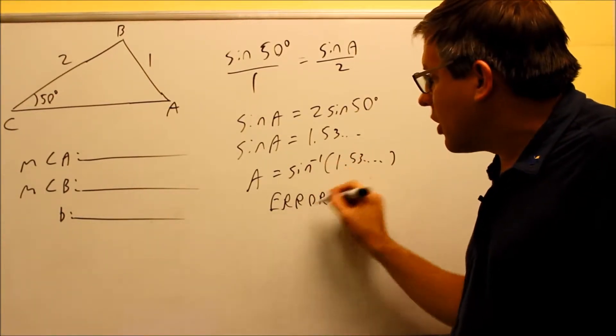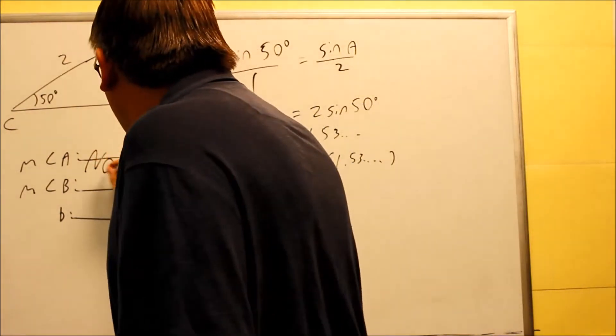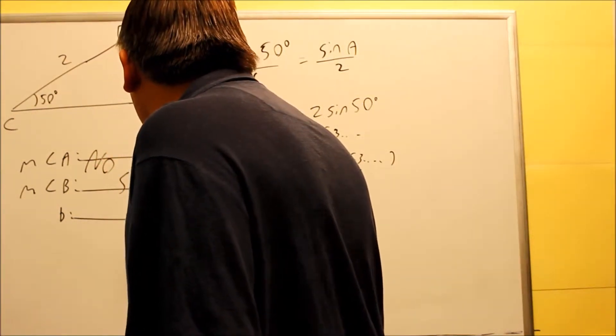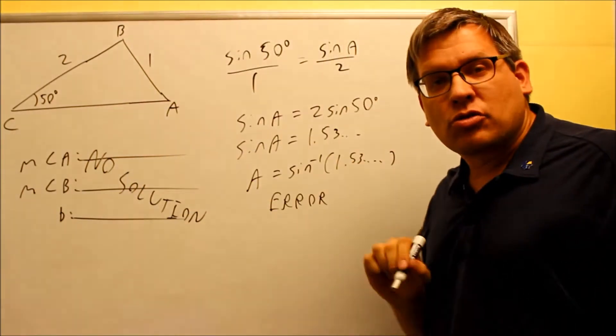So in this case, because you get an error, that means that the whole problem is going to be no solution. That means it's actually not possible to draw the triangle this way.